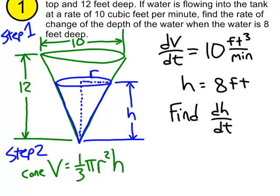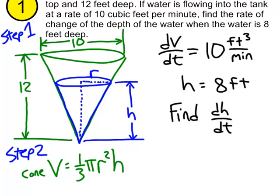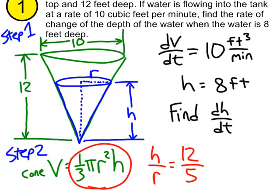Let's write a proportion that relates r and h. The height of the water over the radius of the water equals the height of the tank over the radius of the tank. We use 5 for the radius since 10 is the diameter. We can get r by itself: that gives us r equals five-twelfths h.